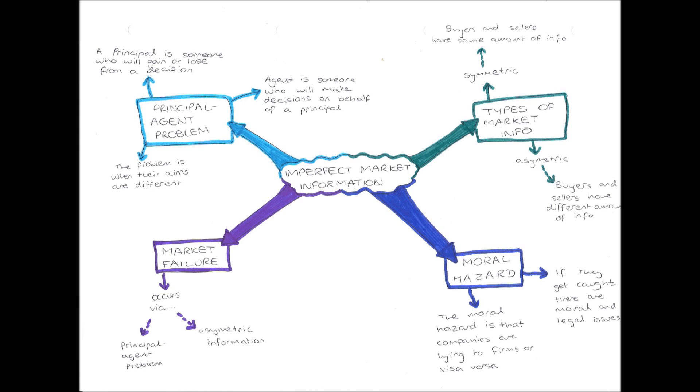Symmetric market information occurs when buyers and sellers of a good, so suppliers and demanders if you're talking about the curves, they have access to the same amount of information about the good. For example, if you are buying an iPhone, you know how much internet availability you are getting in your package, you know how many texts, you know how many calls, and you know how much it's going to cost each month. And that is known also by the provider, so somebody like EE. They are going to know exactly the same stuff as you do about the package.